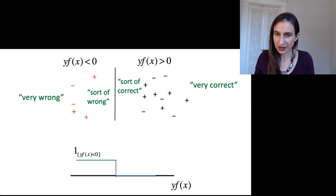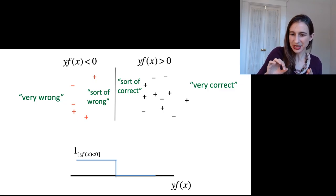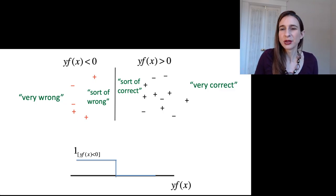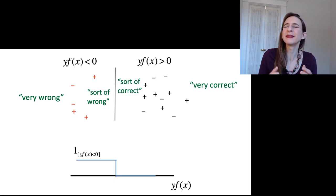But then on the other extreme, these are points where y times f is really, really small. Those are times when f was really big and y was the opposite sign. So that's where the function was really confident. I'm really sure I got this right, but it actually got it wrong.